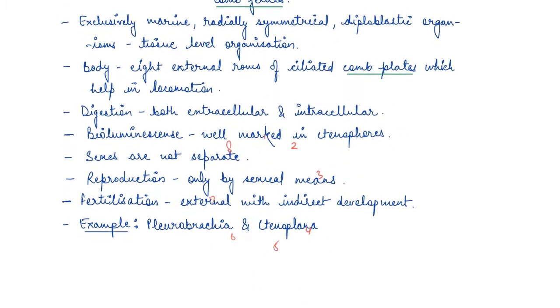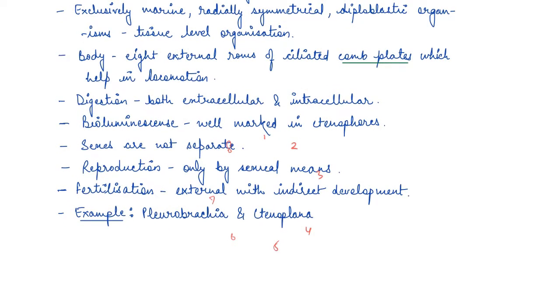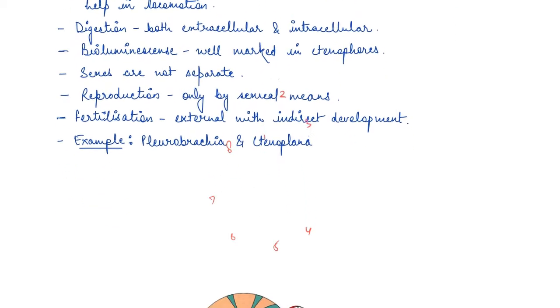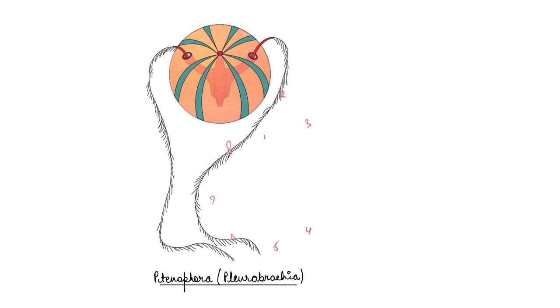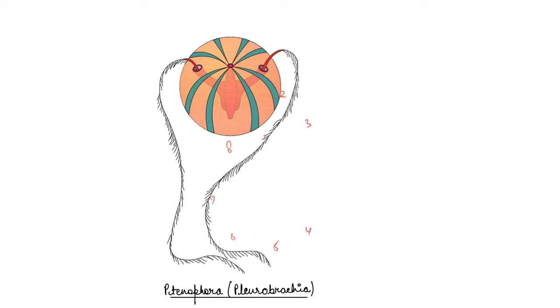I can even label it as one, two, three, four, five, six, seven and eight. So they have eight external rows. It is ciliated and it has comb plates which helps in locomotion, it helps them in movement. These are the comb plates. You can see that they bear the small cilia. The body bears eight external rows and ciliated comb plates which helps in locomotion.